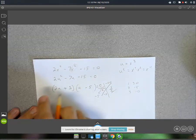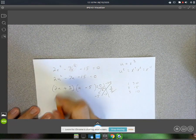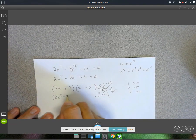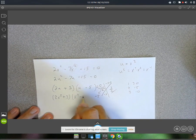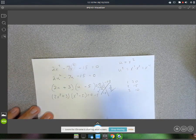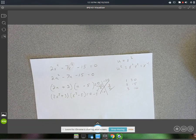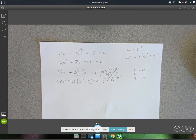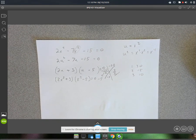Now I'm going to re-substitute the x squared back in for u. So I've got 2x squared plus 3. And x squared minus 5 equals 0. From here, we can go ahead and set each of those factors equal to 0 and solve.